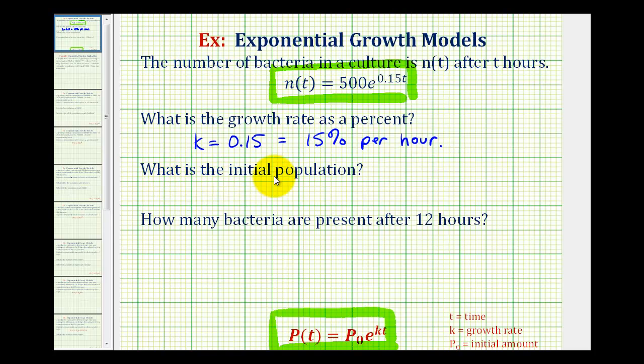Next, we're asked to determine the initial population, or the population when t is equal to 0. Well, the initial population is p sub 0, so looking at our function, the initial population would be 500 bacteria.